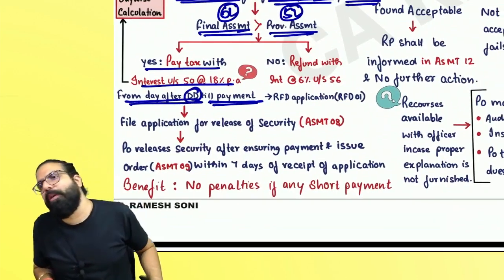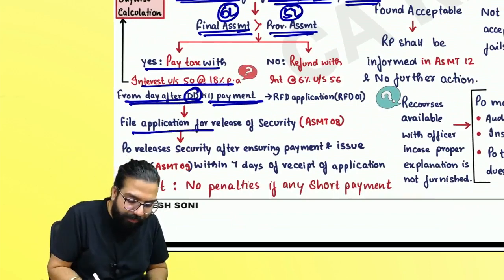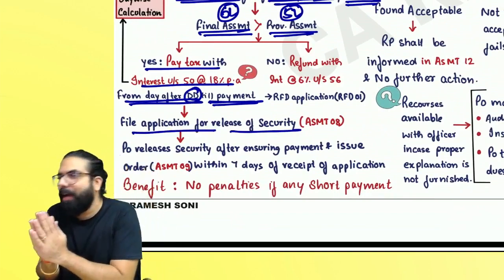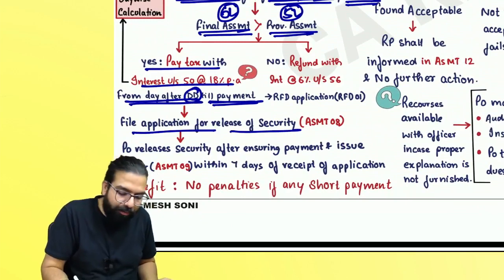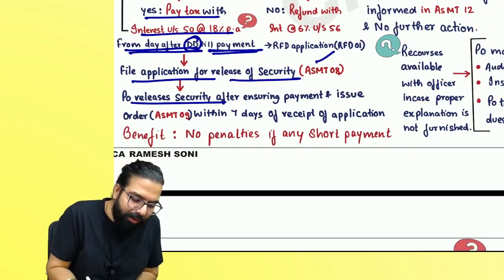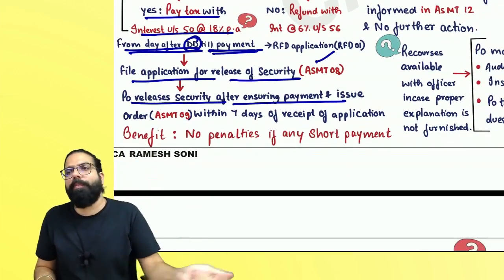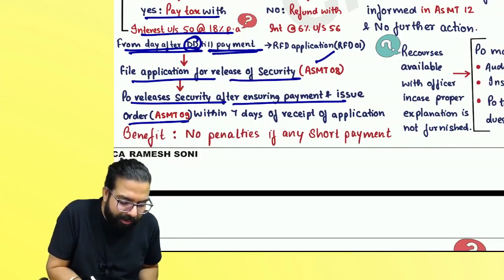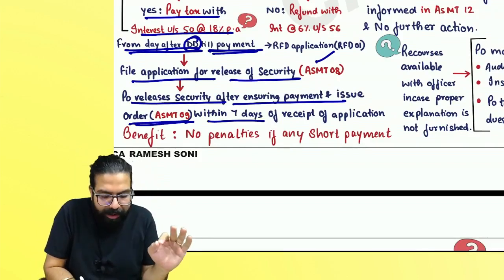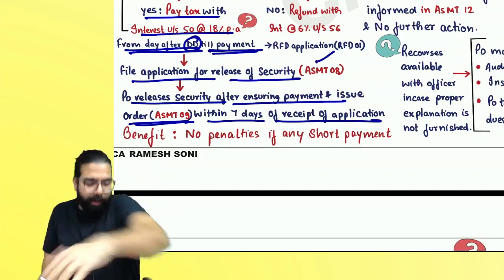Once you have made the payment of the differential amount, you will tell the officer for release of security — please give my bank guarantee back. For release of security, you will inform him in ASMT-08. He will release the security after ensuring all payments have been made, and he will release it in ASMT-09 within seven days of receipt of the application.